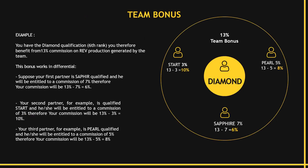Now let's look at how the team bonus applies once you have downlines moving up in ranks. Let's suppose you are a diamond — as a diamond, you get 13% team bonus on your team's sales performance. But if one of your team members is a Sapphire, they are entitled to 7% of their own team bonus, so you will be getting 13% minus 7%, which is 6%. If you also have a star within your organization, you get 13% minus their 3%, so you'll be getting 10%. The same applies for pearl — you can do the math.